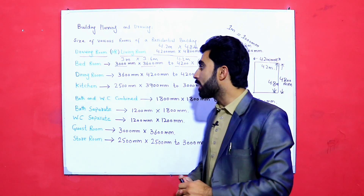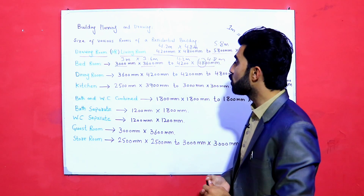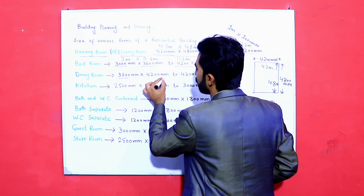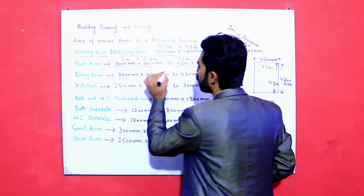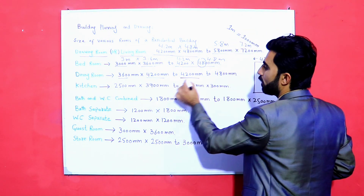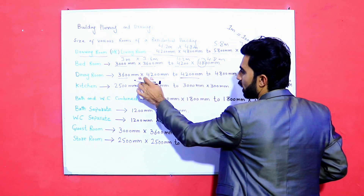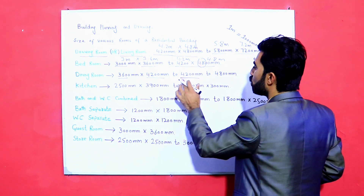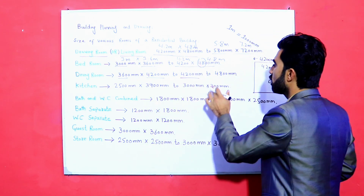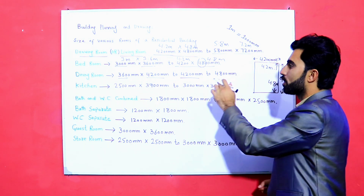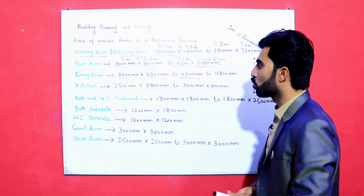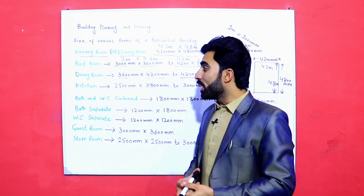For the dining room, the standard size is 3600 mm by 4200 mm. You can also take 4.2 meters by 4.8 meters if a larger size is needed. These are the standard dimensions for the dining room.